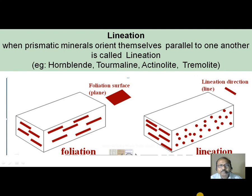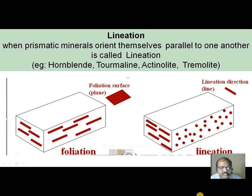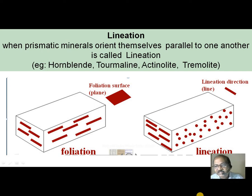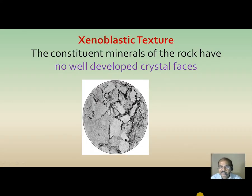Lineation. When prismatic minerals orient themselves parallel to one another, it is called as lineation. So, if flaky minerals orient parallelly, we can call it as foliation. Whereas, when the prismatic minerals orient themselves parallel to one another, in such a case we call it as lineation. This is the difference between foliation and lineation.